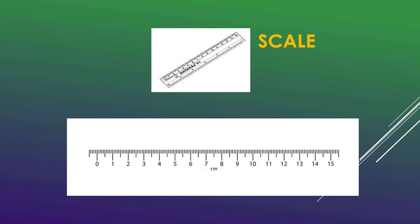The length from 0 to 1 can be called 1 cm. From 1 to 2 is again 1 cm. Like that it goes on.